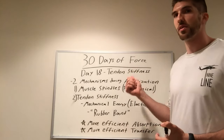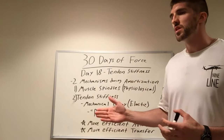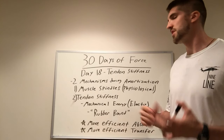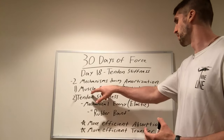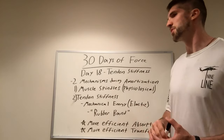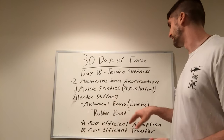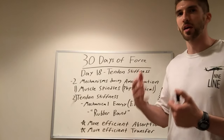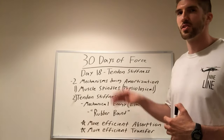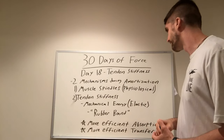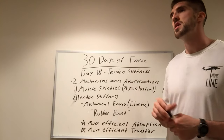The second mechanism, and the main focus of today, is tendon stiffness. We can view the tendon stiffness part of our amortization phase from a physics standpoint, because there is mechanical energy — elastic stored energy — that comes into play here. So those are the key differences between the two: mechanism one is more anatomy and physiology, mechanism two is more physics and mechanical.